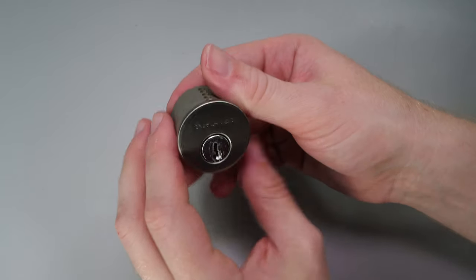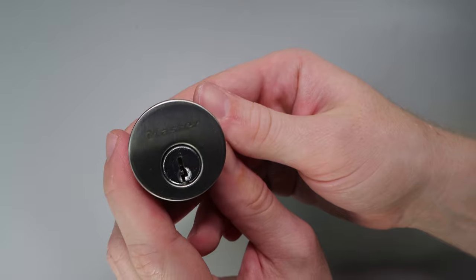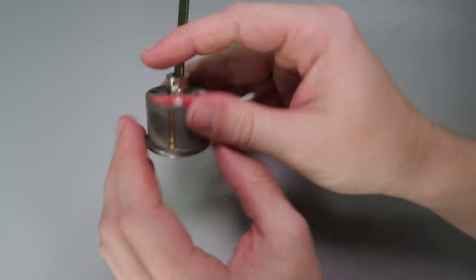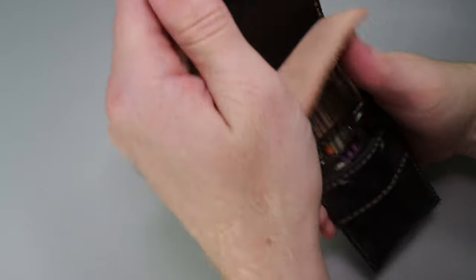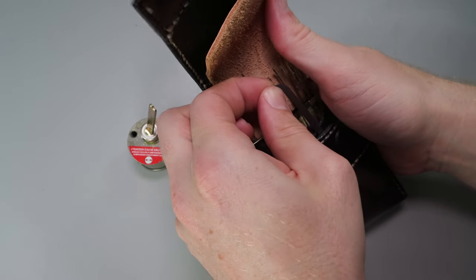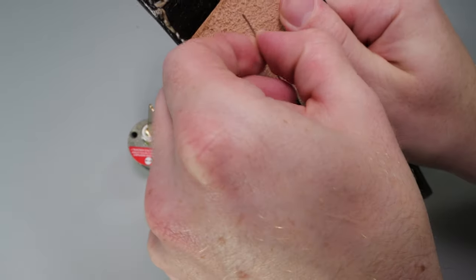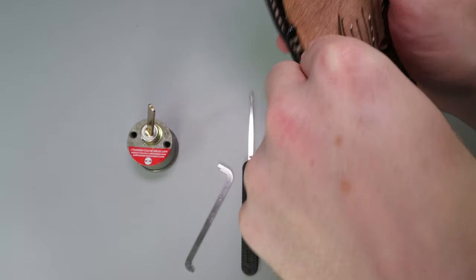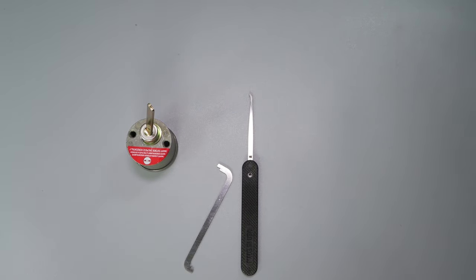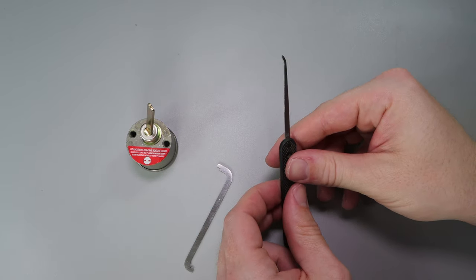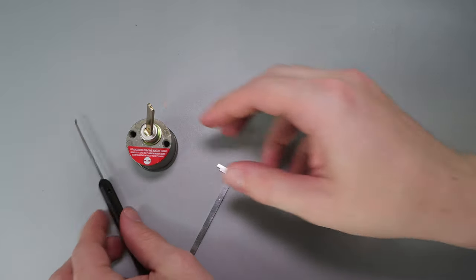So let's see what it takes to pick open this Master Lock with a Kwikset KW1 keyway. What I'm going to do is I'm going to get my top of the keyway tensioner in 50 thousandths out. It should be this one right here. I'm going to use my typical pick which is a Peterson hook number 1 in 25 thousandths. It's just their standard pick.